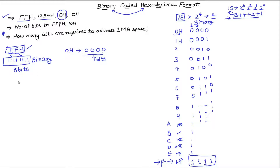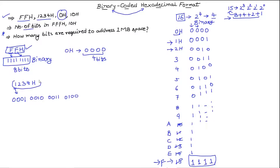Let's look at 1234H. Some people might think this will take only 4 bits, but that's not the case. Each hex digit takes 4 bits: 1 is 0001, 2 is 0010, 3 is 0011, and 4 is 0100. So 1234H converts to a 16-bit binary number — 4 bits times 4 hex digits gives 16 bits total.